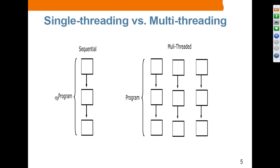On the left, you have an example of a single-thread case where a single thread is performing tasks. On the right, we have a multi-threaded application with three threads performing tasks. Multi-threaded applications are supposed to provide much better performance than a sequential, single-thread based application.